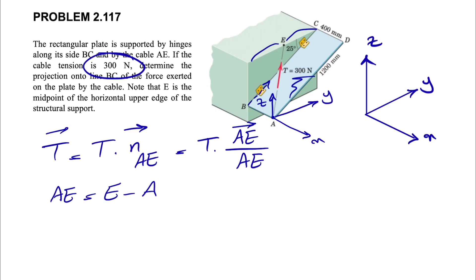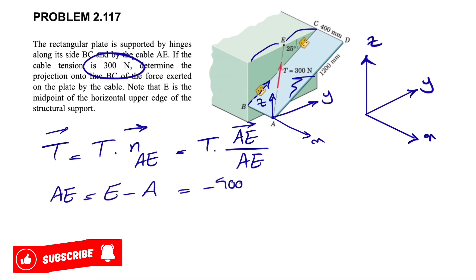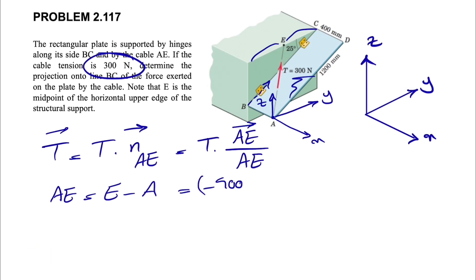First, we need to find the x-component of point E. If we look at it, we're going from A to B, which is minus 400 millimeters — so that would be the x-component for E. The x for A would simply be zero because we placed the origin at point A, so there is no i-component.